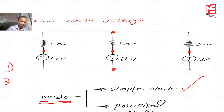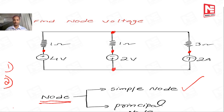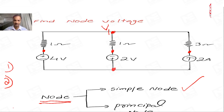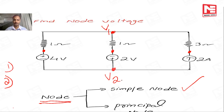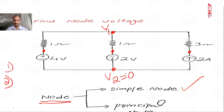Come to the second step: assign the voltage at each node. In this example, let us take the node voltage as V1, and let us take the node voltage as V2. After assigning the voltages, select any one of the nodes as a reference node. I am taking V2 as the reference node. The reference node potential should always be equal to ground potential, which means its value equals zero. So V2 equals zero.